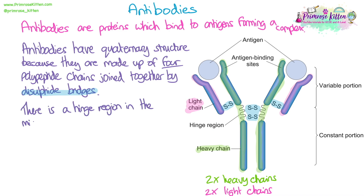There is an area in the middle called the hinge region. This allows the antibody to be flexible because there are two antigen binding sites — two arms of the antibody — and being able to bend allows those two arm points to stretch and bend apart from each other.